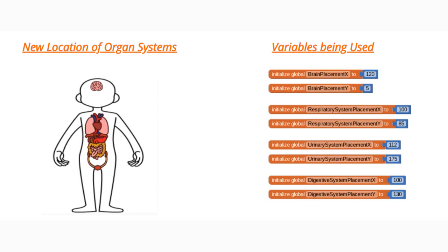What we'll be doing is basically subtracting a few pixels from each of those organ system placements. The new variables for our organ system placements will result in us getting a better image on our body outline.